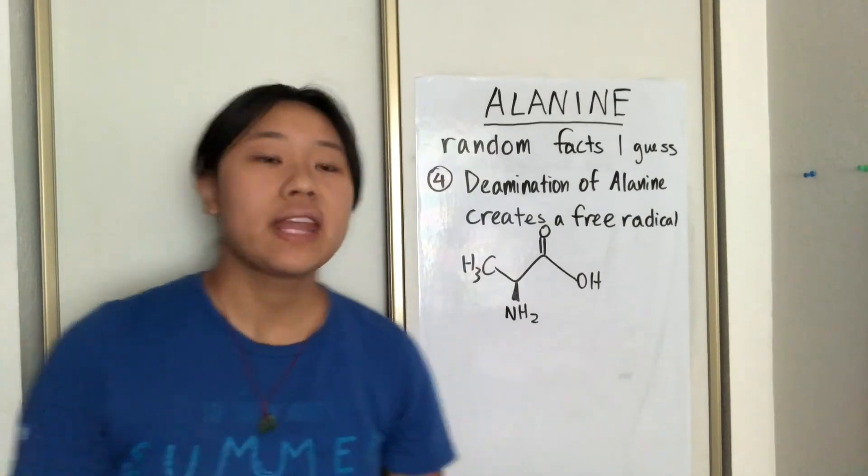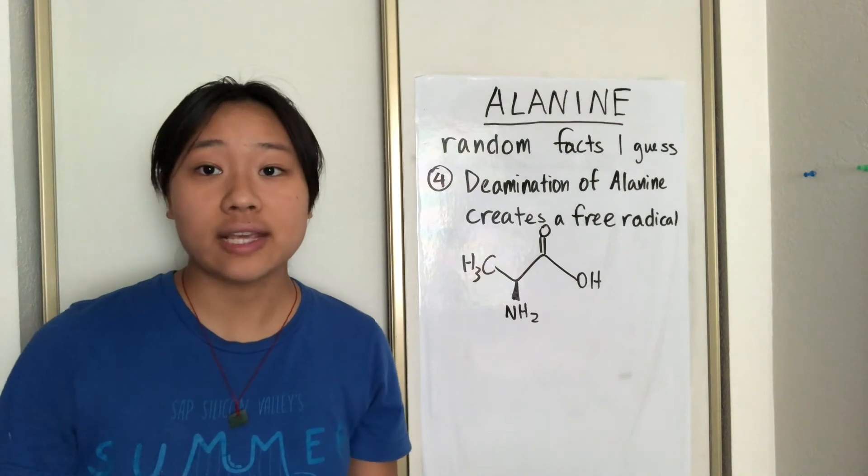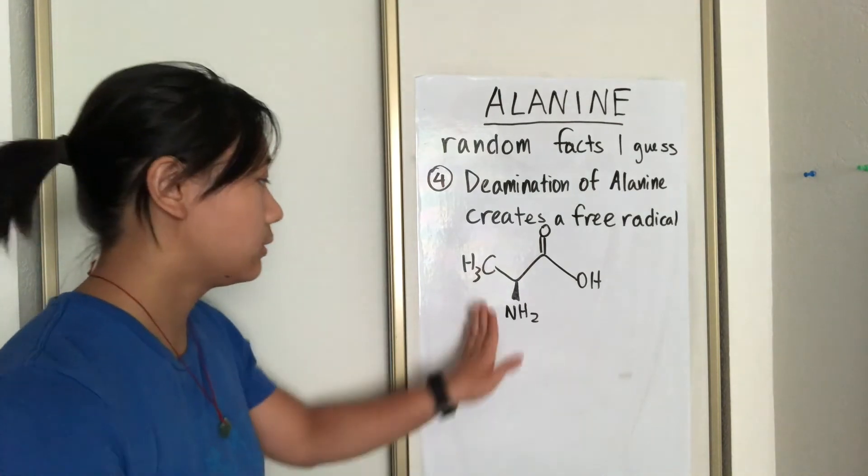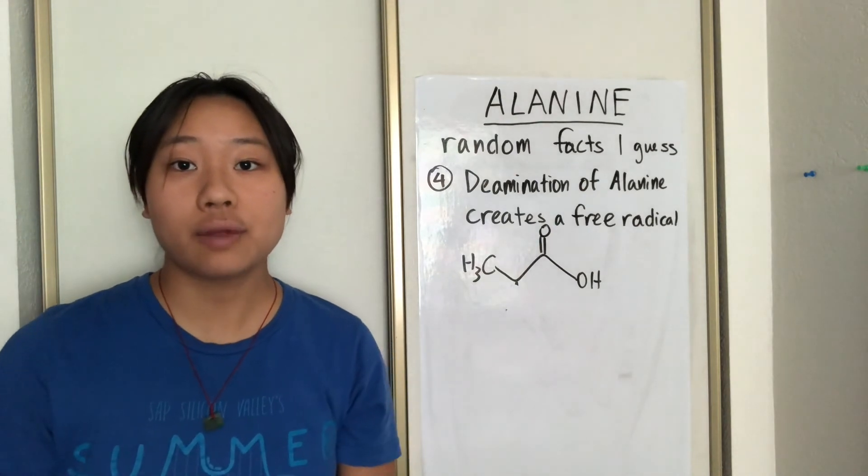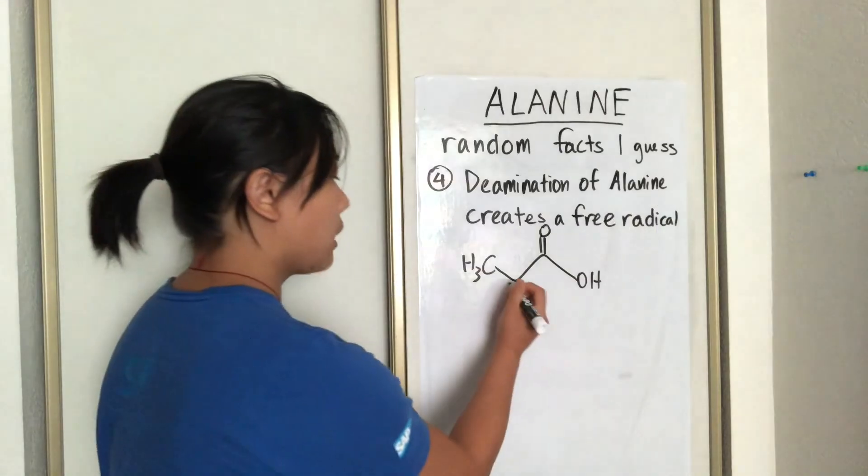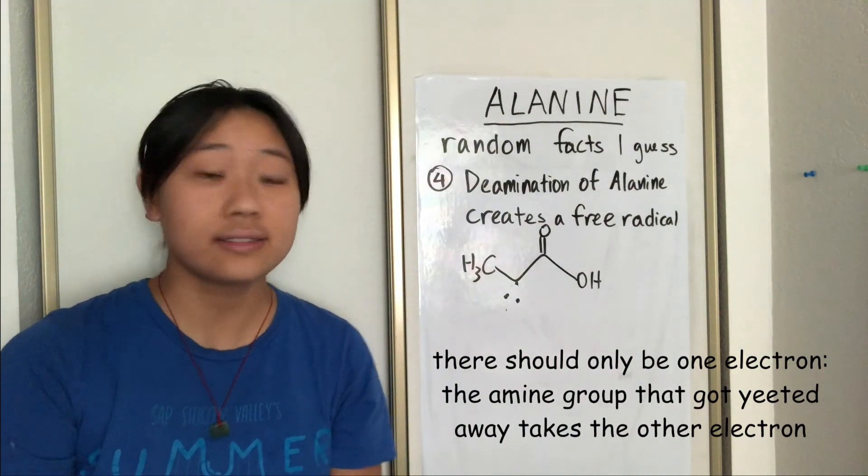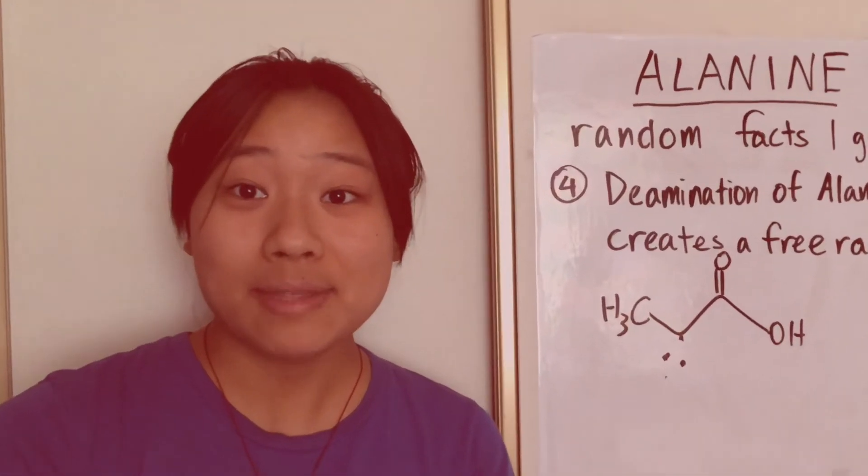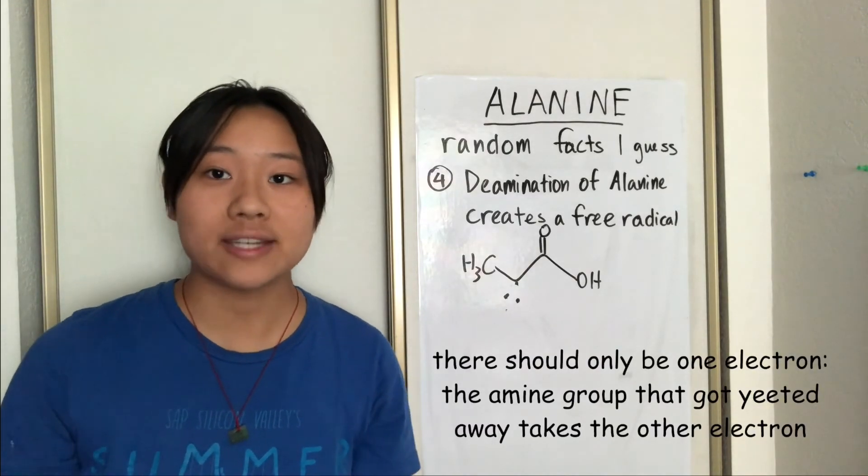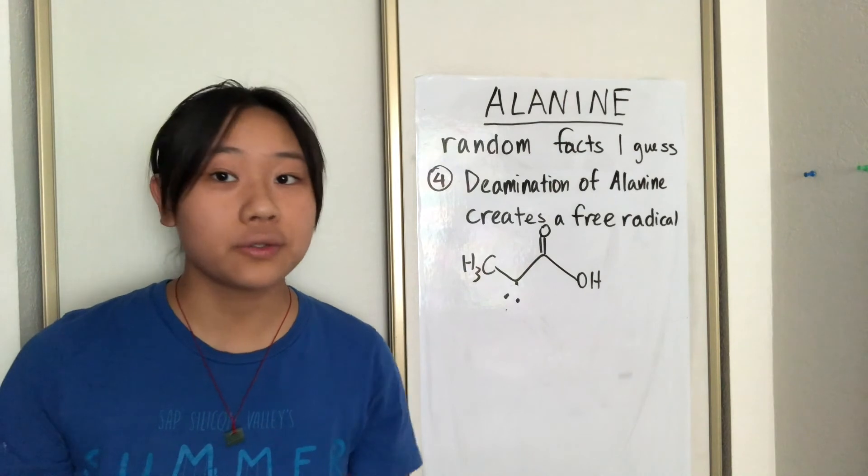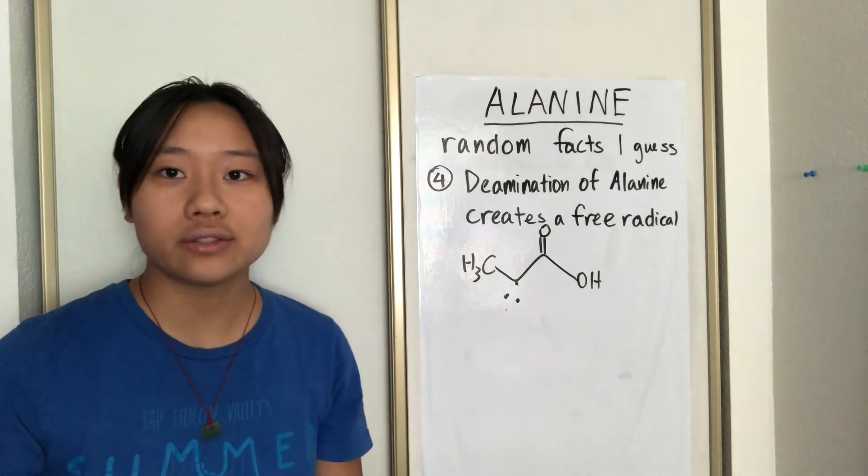Fun fact number four, deamination of alanine creates a free radical. Now, what's deamination? Deamination basically means you're taking the amine group away from a molecule. And in this process, alanine becomes a free radical. What's a free radical? A free radical basically means that it has eight electrons instead. Now, this makes alanine upset. Alanine's like, what? Give me my amine group back. And these free radicals are super reactive, and they basically go on a rampage, and they can damage DNA, RNA, proteins, lipids, all sorts of important molecules for your body. So free radicals are not good.